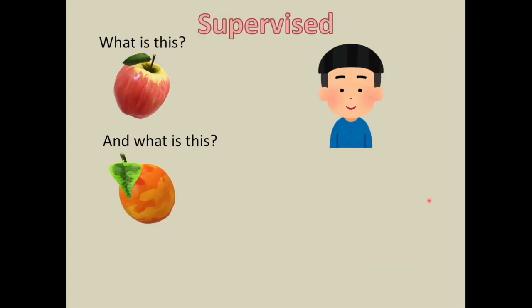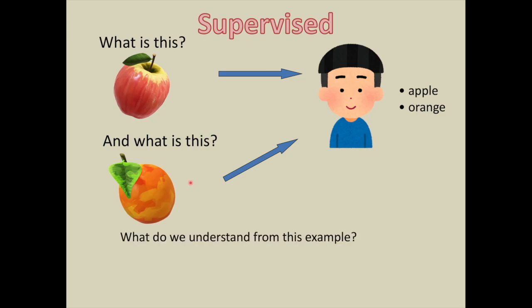Let us understand supervised learning with the help of an illustration. If you ask a three-year-old boy what is this fruit, he will promptly reply that one is an apple and another one is an orange. So what do we understand from this example? Basically, a three-year-old boy can adapt to his surroundings and can act accordingly. The same adaptation we want to teach to a machine to recognize and provide actions.